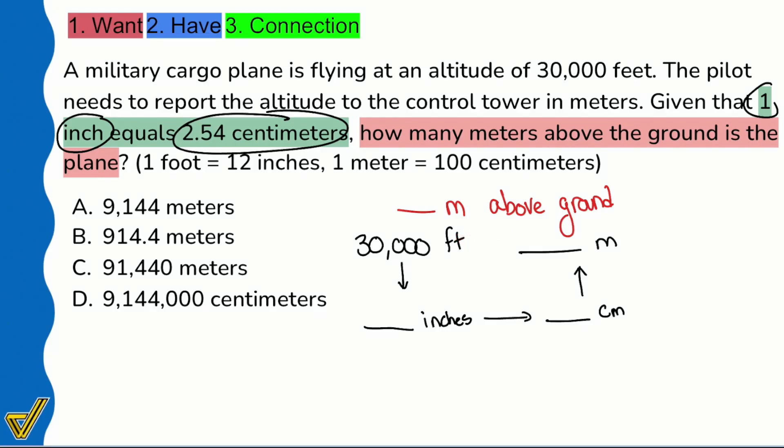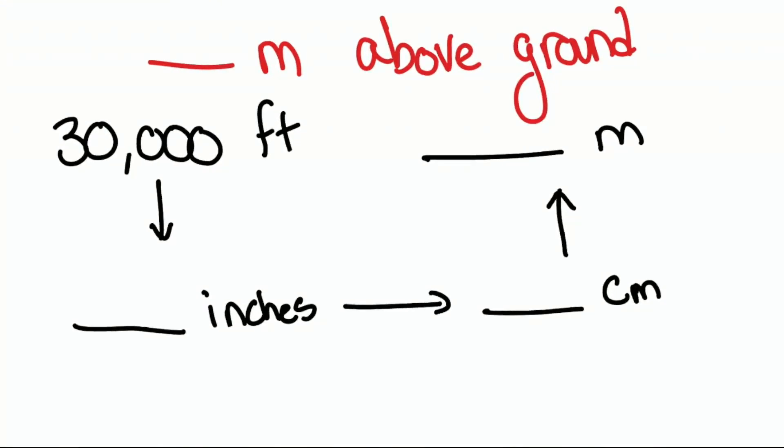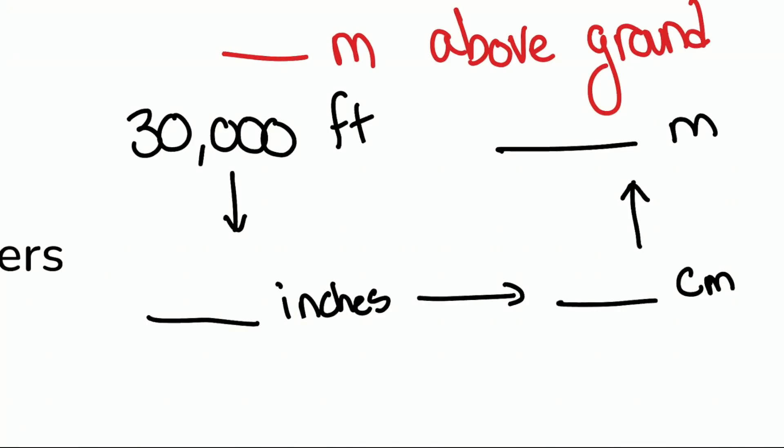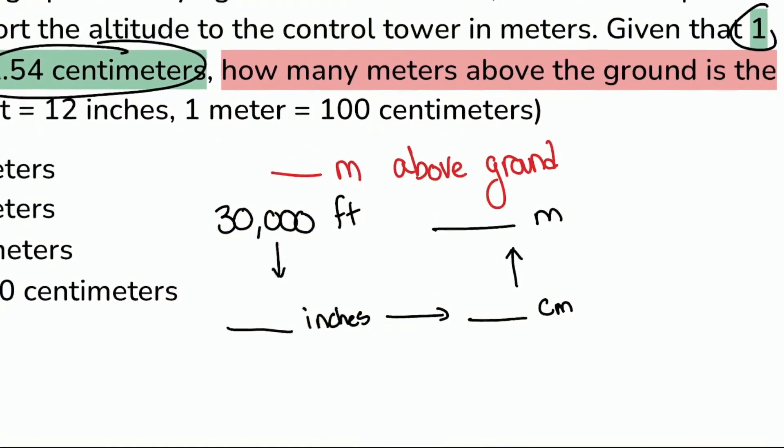Because once we have it in inches, since one inch equals 2.54 centimeters, we can then turn the inches into centimeters, and then once we have centimeters, with the metric system we can go from centimeters to meters to kilometers and all that good stuff. It's not going to be a direct path. Take a look, it's not like we're going to say 30,000 feet, bam, one shot. That's what makes this problem a little more difficult, and that's why I appreciate it and you should too.